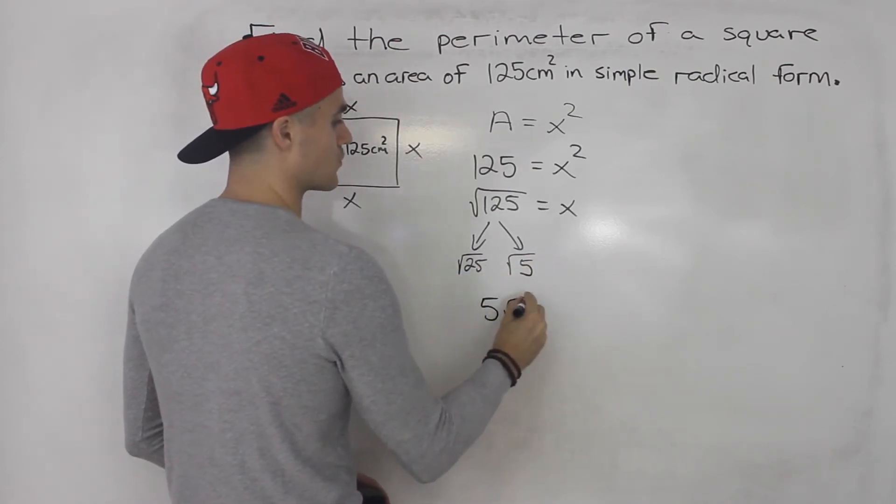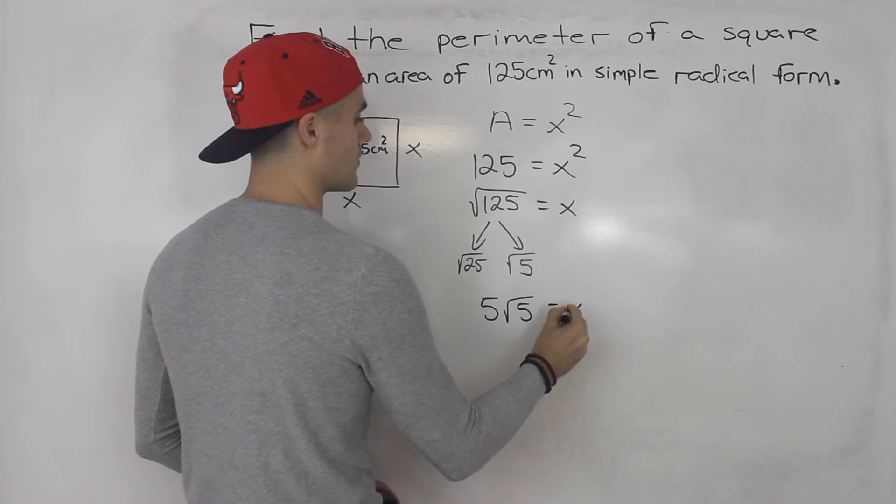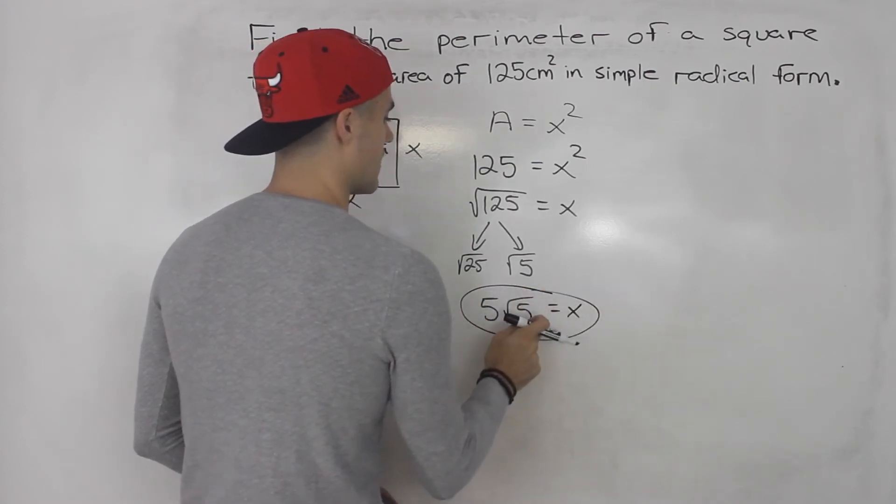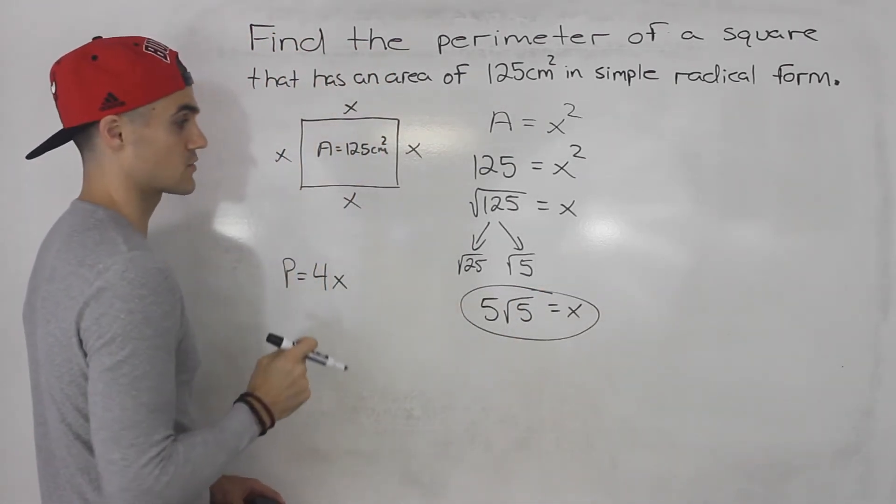Root 25 is 5, and root 5 cannot be simplified further. So that represents the length of this square.